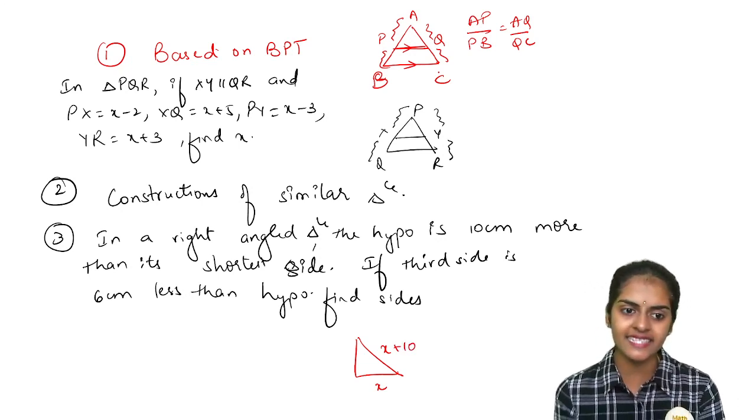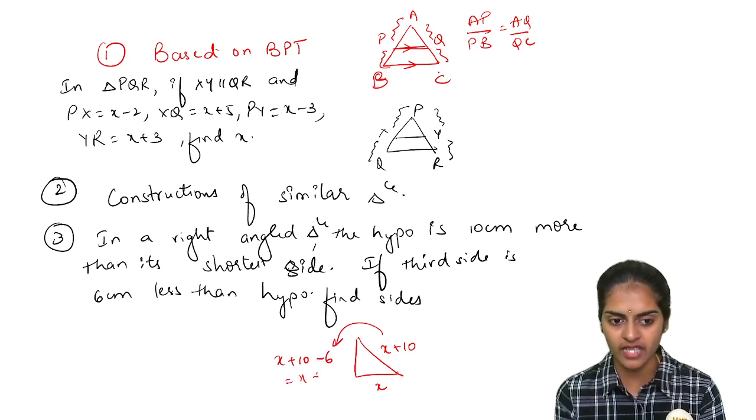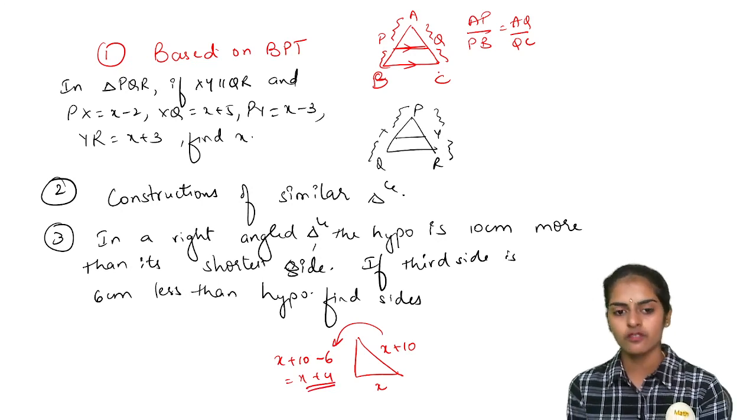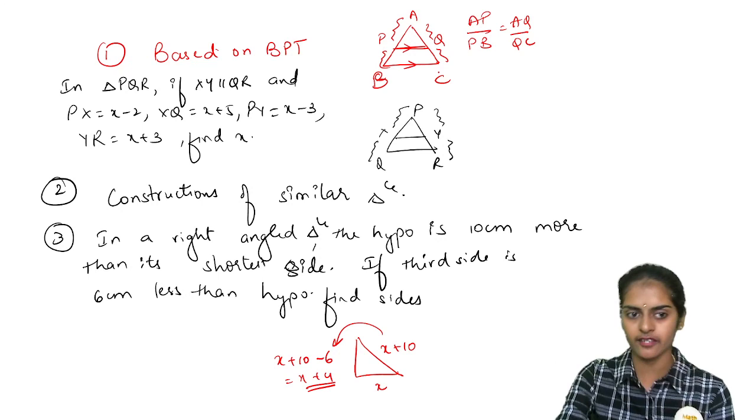Next, they are saying if third side is 6 less than hypotenuse. So from hypotenuse, if I subtract 6, this is hypotenuse, from this I am subtracting 6, so the other side will be x plus 4. So for these three sides, use Pythagoras theorem and you will get a quadratic equation and you can solve.